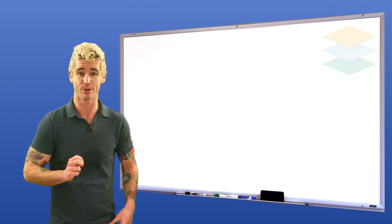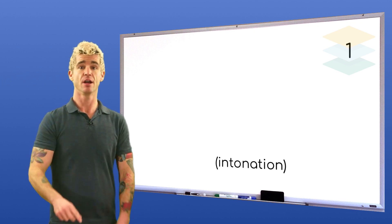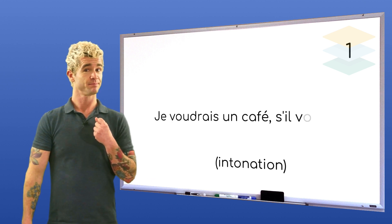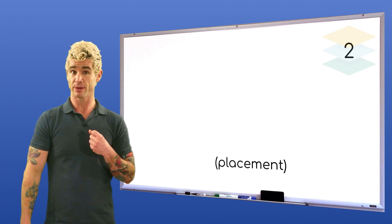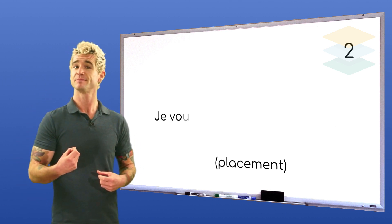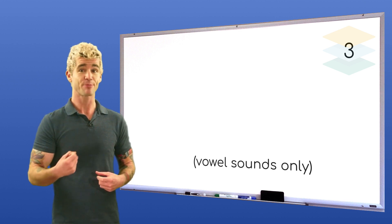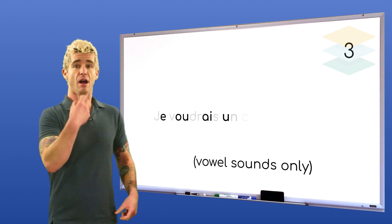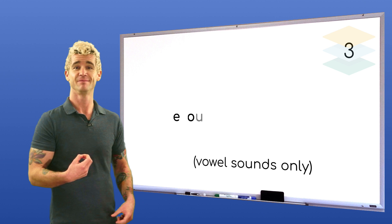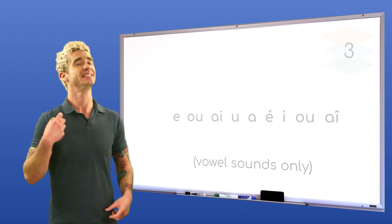Okay, one more example. Step one, intonation. Je voudrais un café, s'il vous plaît. Step two, vowel placement. Je voudrais un café, s'il vous plaît. Step three, vowels only. D'accord,